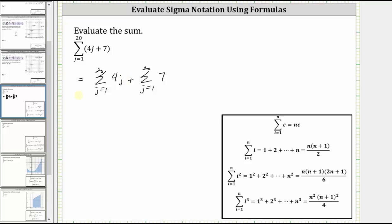And for the first sum, let's factor out the four and write the sum as four times the sum from j equals one to 20 of j.